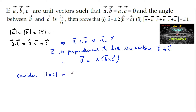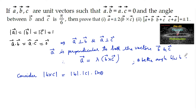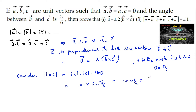By the definition of cross product, |b×c| = |b|·|c|·sin(θ), where θ is the angle between b and c, which is π/6. So |b×c| = 1 × 1 × sin(π/6) = 1 × 1 × 1/2 = 1/2.